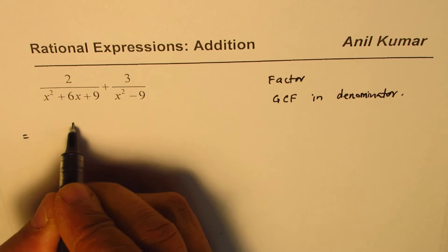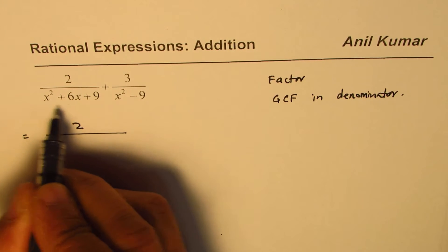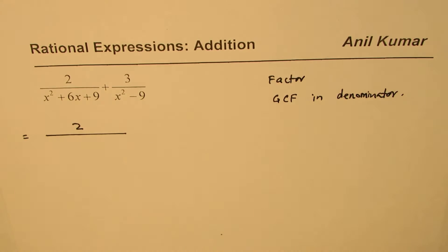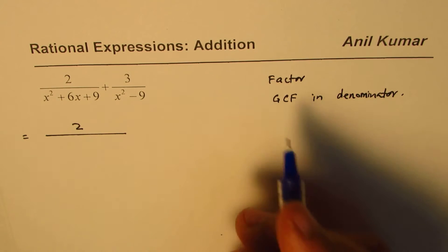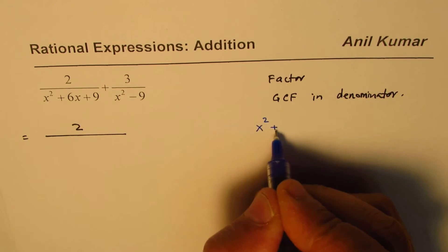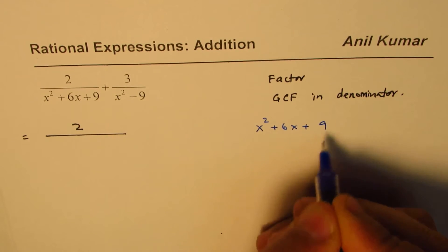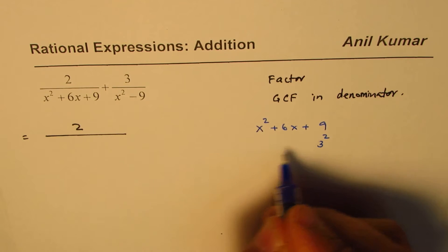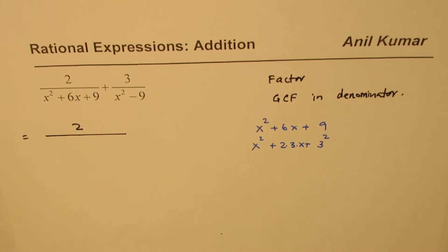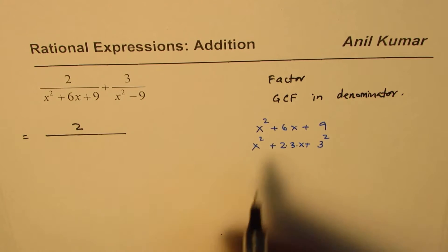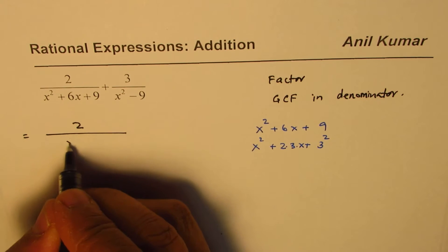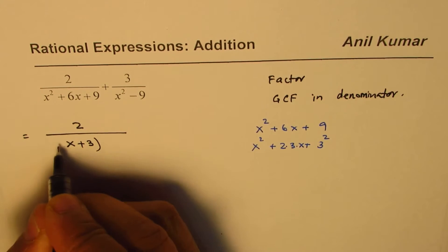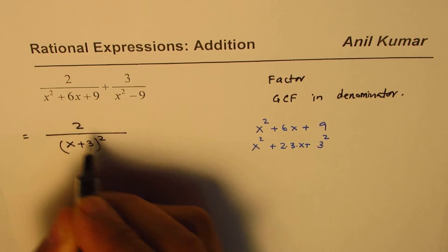Here, the first expression we have 2 over x squared plus 6x plus 9. How do you factor x squared plus 6x plus 9? Well, this seems to be a perfect square. 9 could be written as 3 squared and we have x squared already here. The center term is 2 times 3 times x. So, we could write this as x plus 3 whole square.